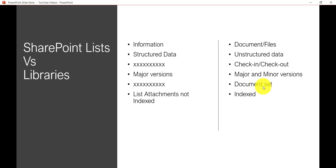Another difference is document sets. Libraries support document sets, which allow you to store related documents together. SharePoint lists do not support document sets. Finally, a major difference regarding search: attachments in a SharePoint list are not indexed by SharePoint, so users must find the item first and then navigate to the attachment. In a library, documents are indexed and available directly in search results.